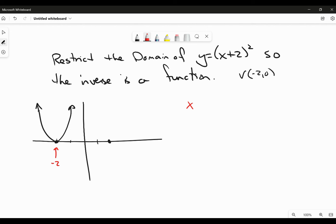I can make x ≤ -2 or x ≥ -2. I have two options there because when I cut it in half, if I choose either half of that parabola and find the inverse of it, I'm going to create a function.